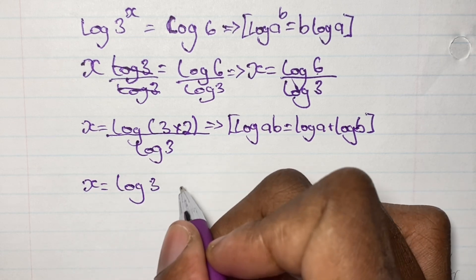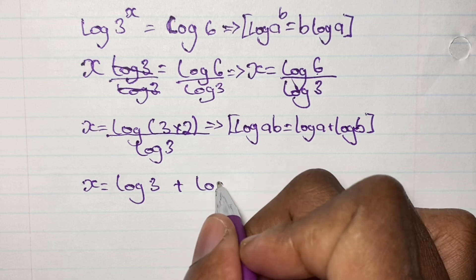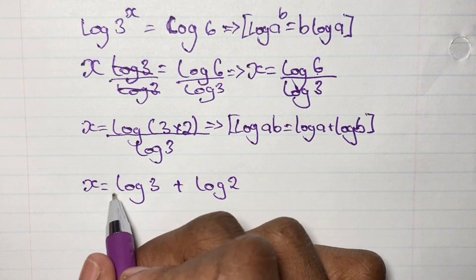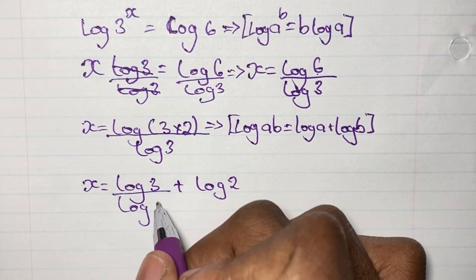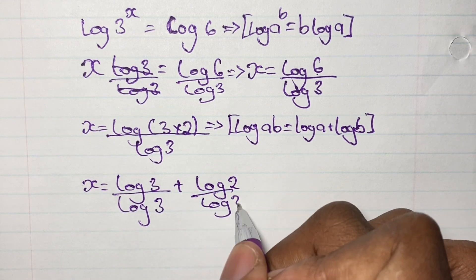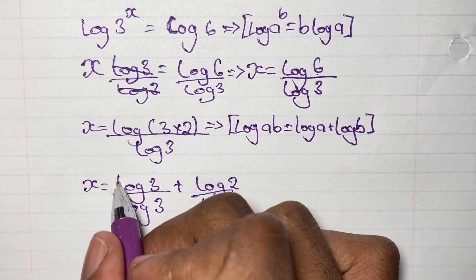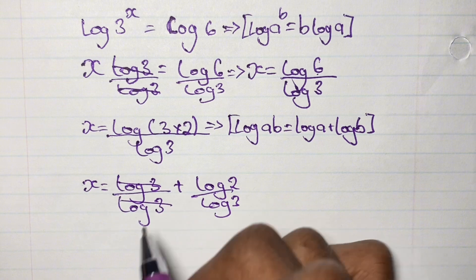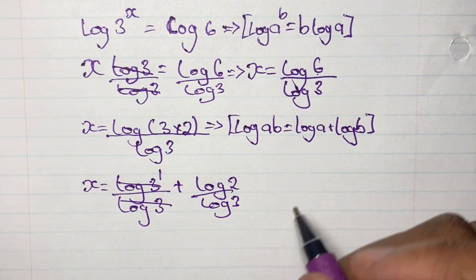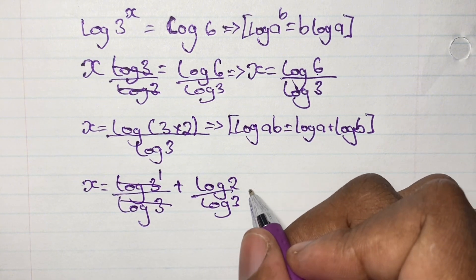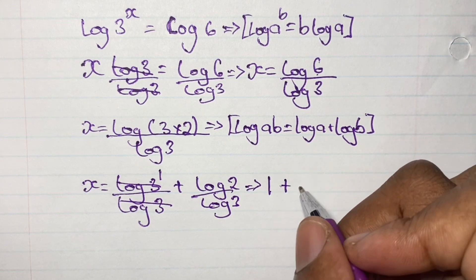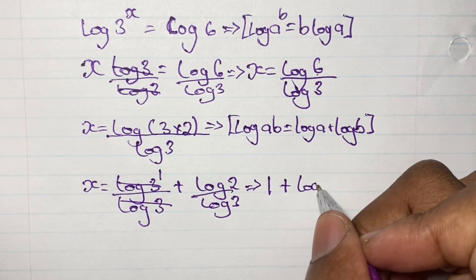We can split the fraction as log 3 over log 3 plus log 2 over log 3. Then log 3 divided by log 3 gives us 1, so we have x is equal to 1 plus log 2 over log 3.